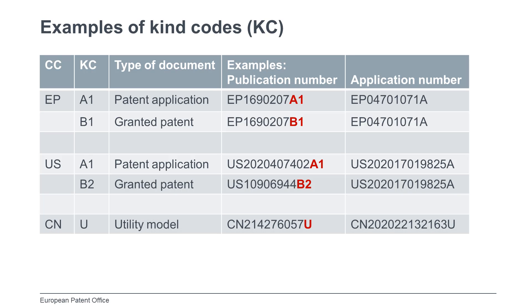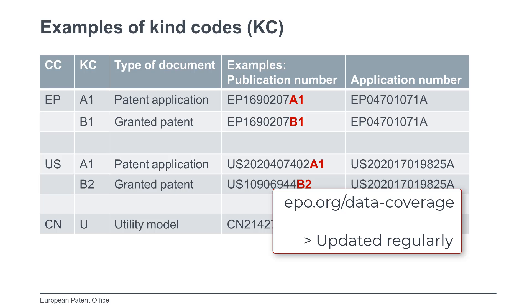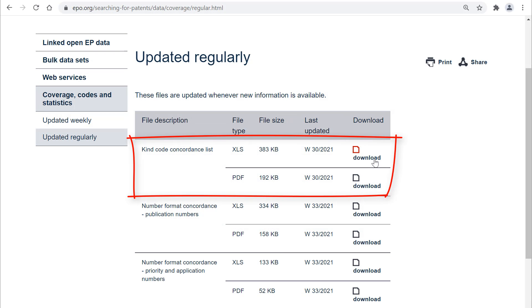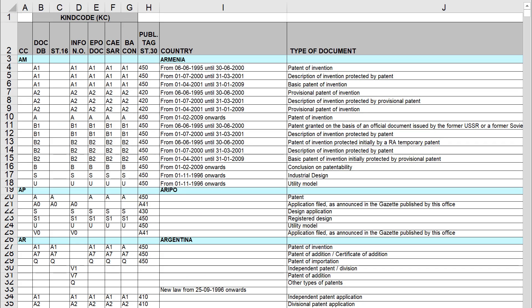You can find the list of kind codes used by the EPO and their meaning by typing this short URL, epo.org/data-coverage, selecting "updated regularly", and then the file "kind code concordance list". With the exception of kind codes corresponding to notifications without publications, all are used in Espacenet.